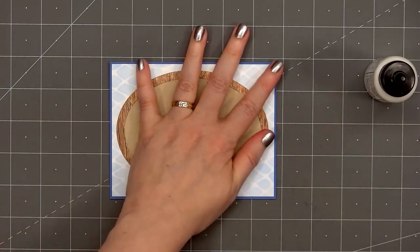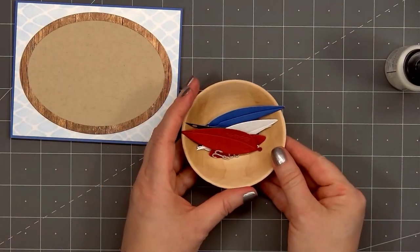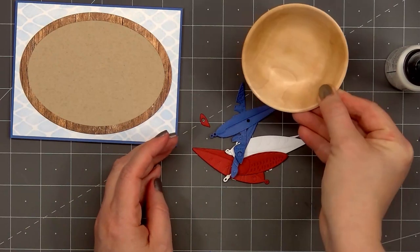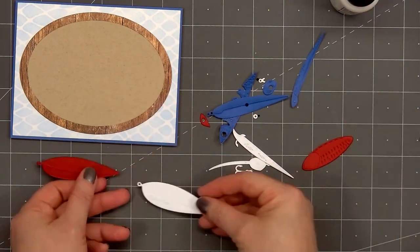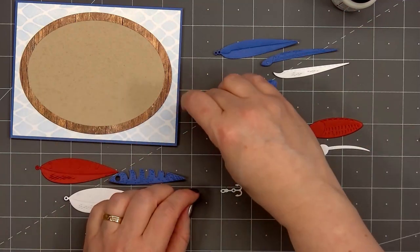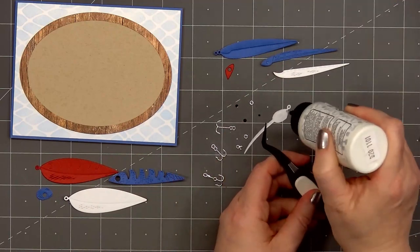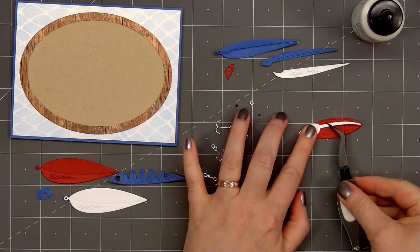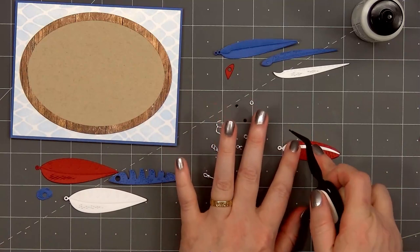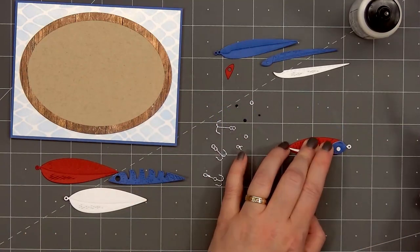I'll set the card aside and start assembling the vintage lures. Since it's Independence Day here in the US or almost Independence Day, depending on when I post this video, I thought it would be fun to make some patriotic lures. I cut out all of the pieces from red, white, and blue cardstock and also silver mirror cardstock for the hooks and the little ends of the lures.